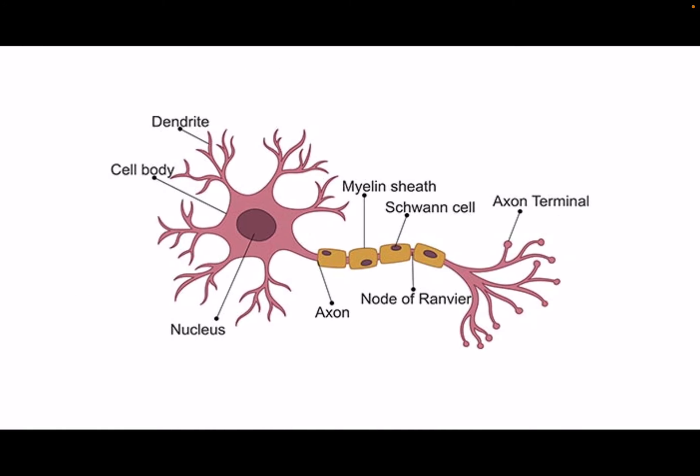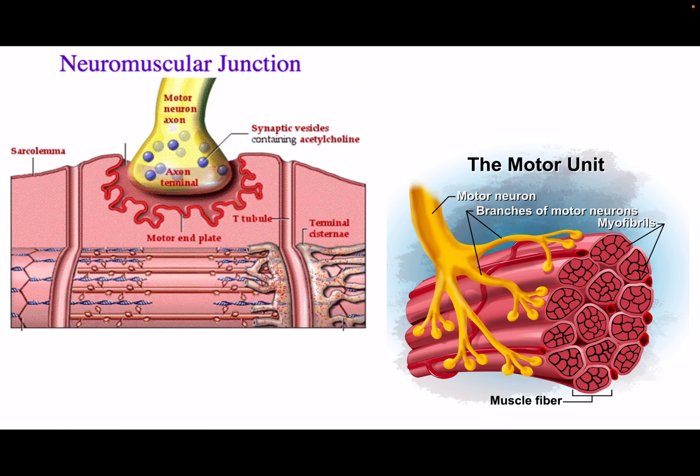Here is a neuron with multiple axon terminals — each axon would connect to a different muscle fiber. This is what our neuromuscular junction looks like: the axon comes down to the muscle fiber, which is the large pink structure. On the muscle fiber is the motor end plate, and notice the small space between them — that is the synaptic cleft. On the right-hand side, you can see the motor unit: one neuron connected to a bunch of different muscle fibers, all forming one motor unit.